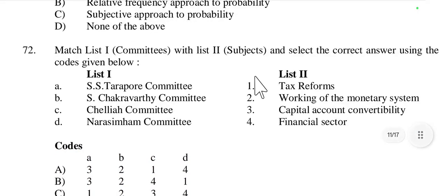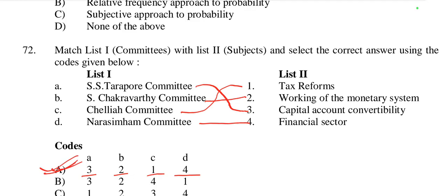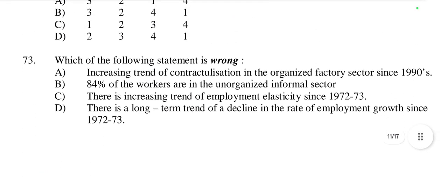Question 72: Match List 1 and List 2 — SS Tarapore Committee is related to capital account convertibility. Chakravarti Committee is related to working of the monetary system. Chelya Committee is related to tax reform. Narasimha Committee is related to financial sector reform. So the matching is A3, B2, C1, D4 — and option A is right.